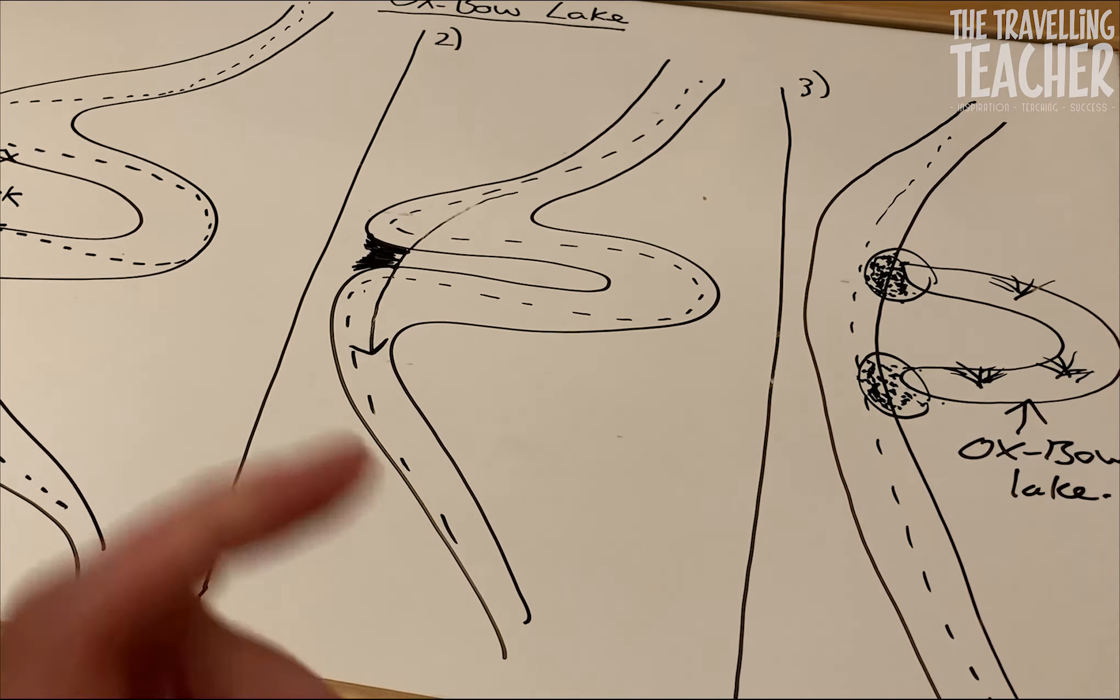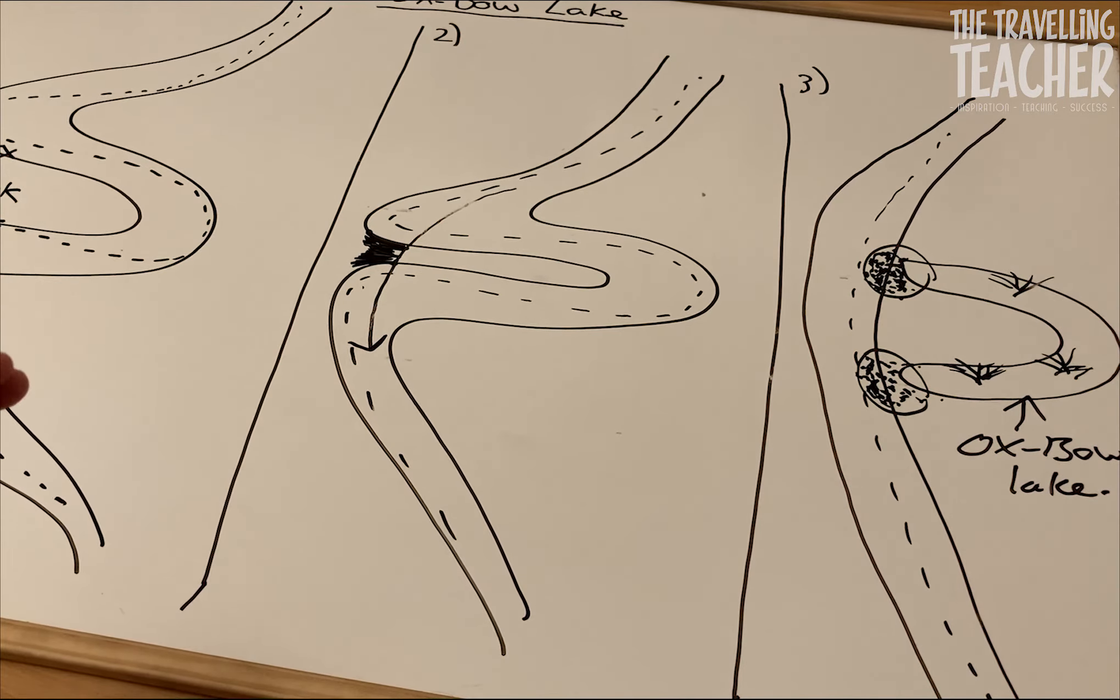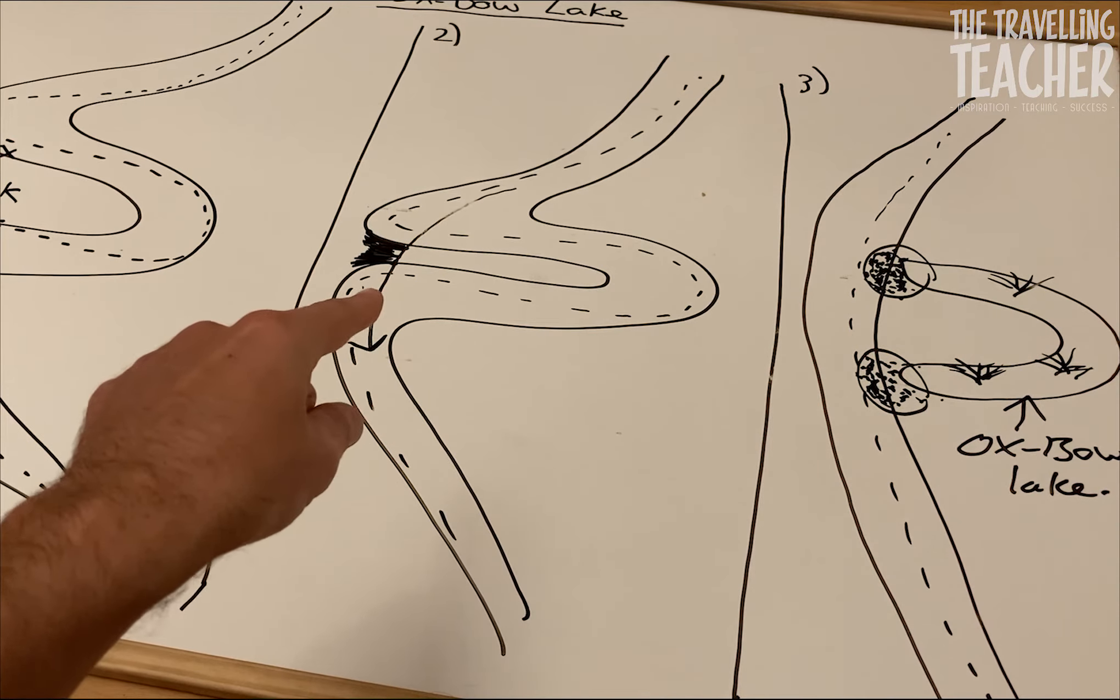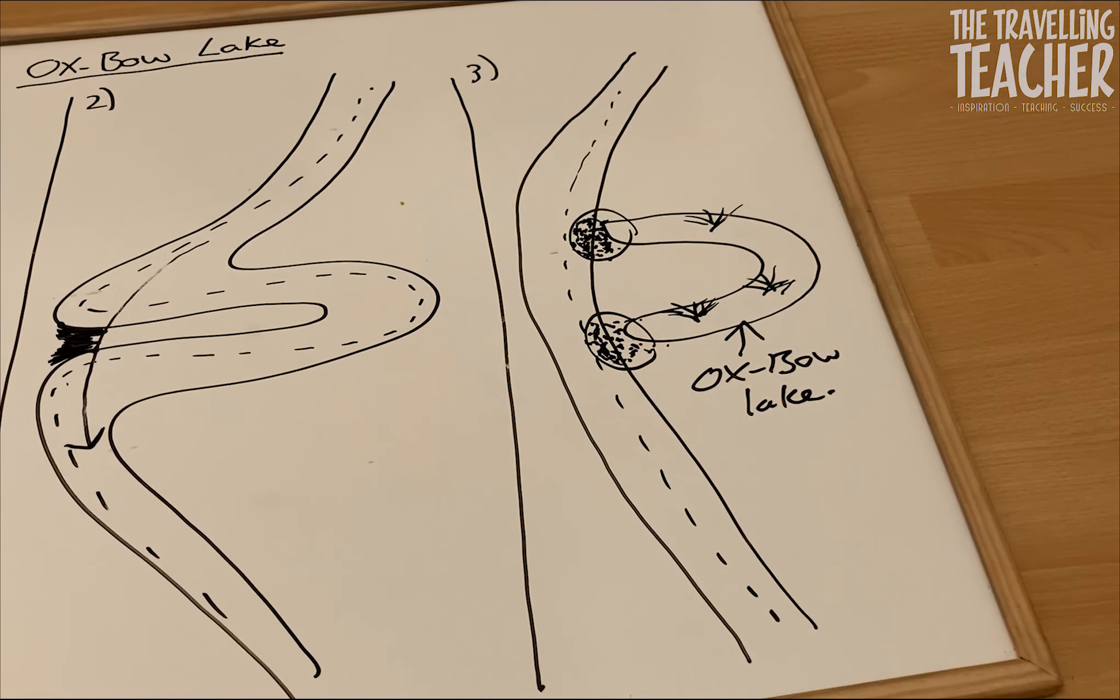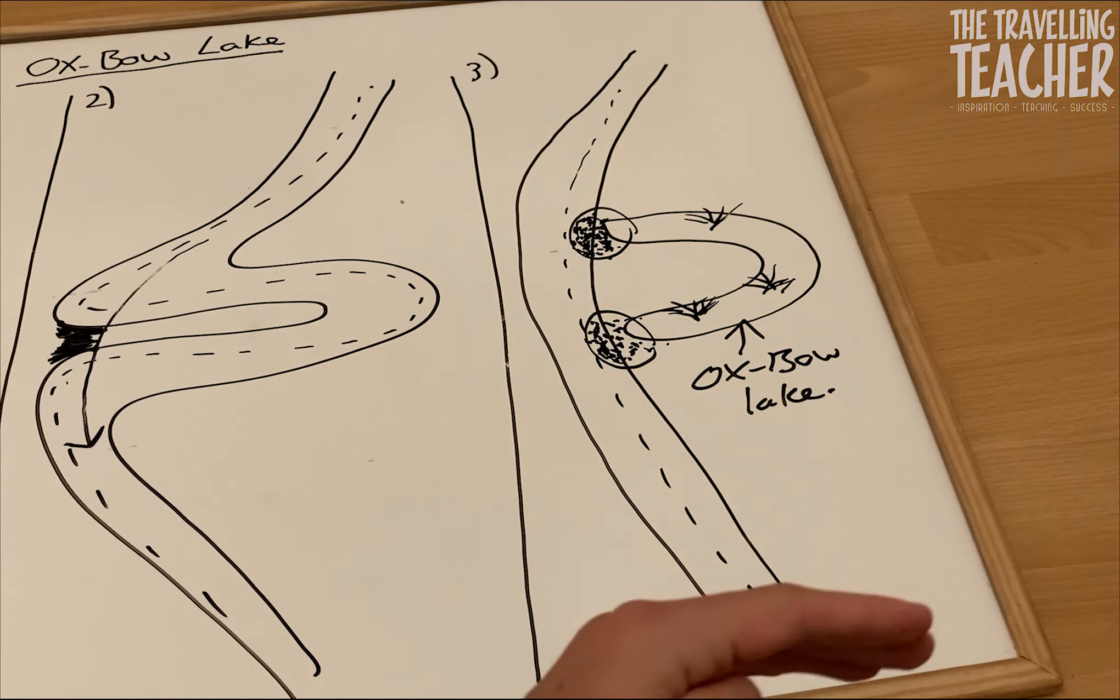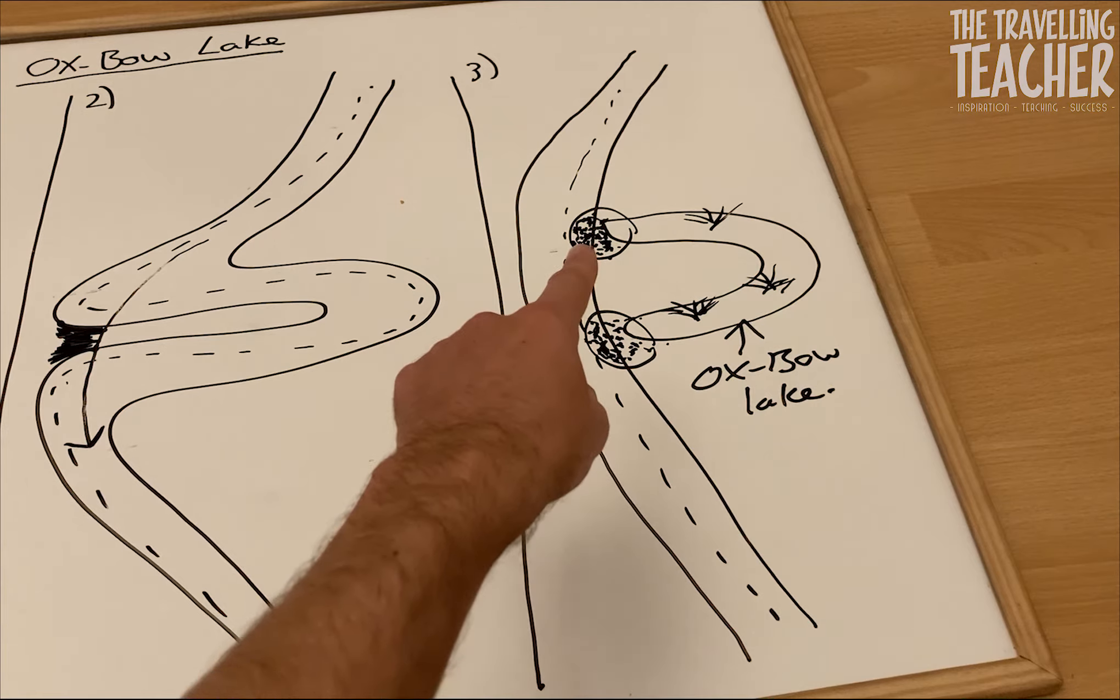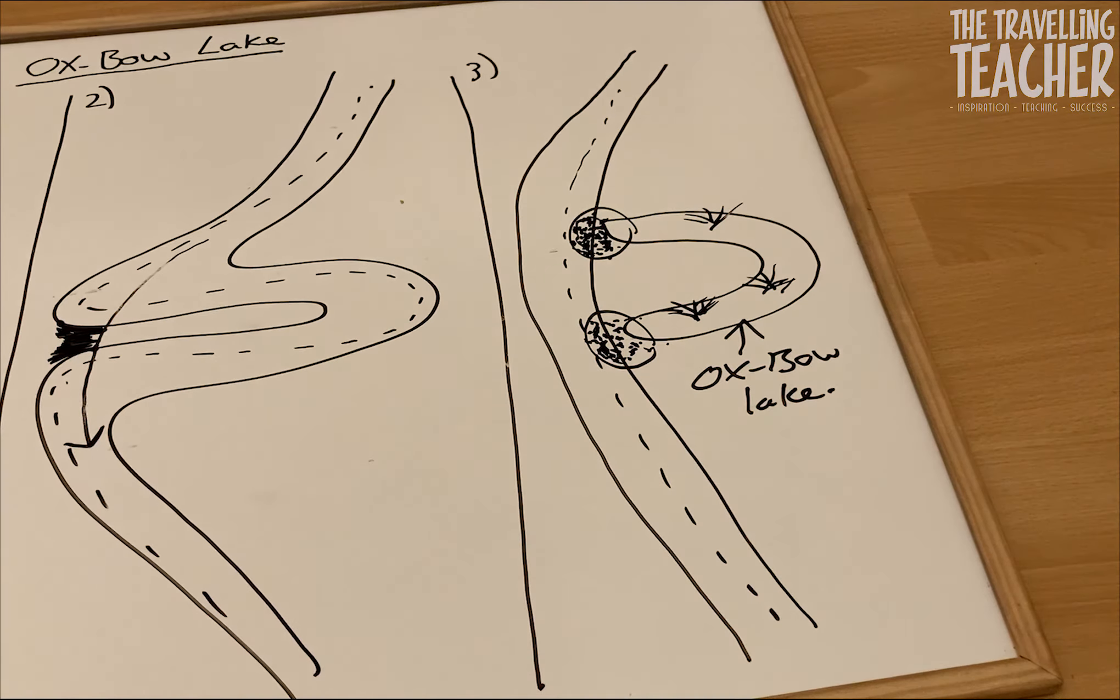So, key points to remember. You've got your two meanders over here. The neck in between. Fastest flow is always on the outside bend. So, the neck becomes more narrow over time, which is what diagram two is representing. Then, eventually, the water will take the fastest route through once those two bends have eventually met. Water will stop flowing around the third meander. And obviously, we're going to get a build-up of deposition there and there, where the flow is slower and it's not as much energy.